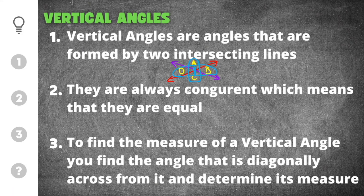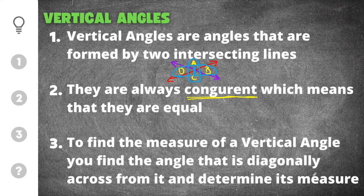What's important about vertical angles is that they are always congruent, meaning they will always be equal — congruent is the math word for equal. That's our third tip: to find the measure of a vertical angle, find the angle diagonally across from it. If you know that angle's measure, they will be exactly the same because they are congruent.